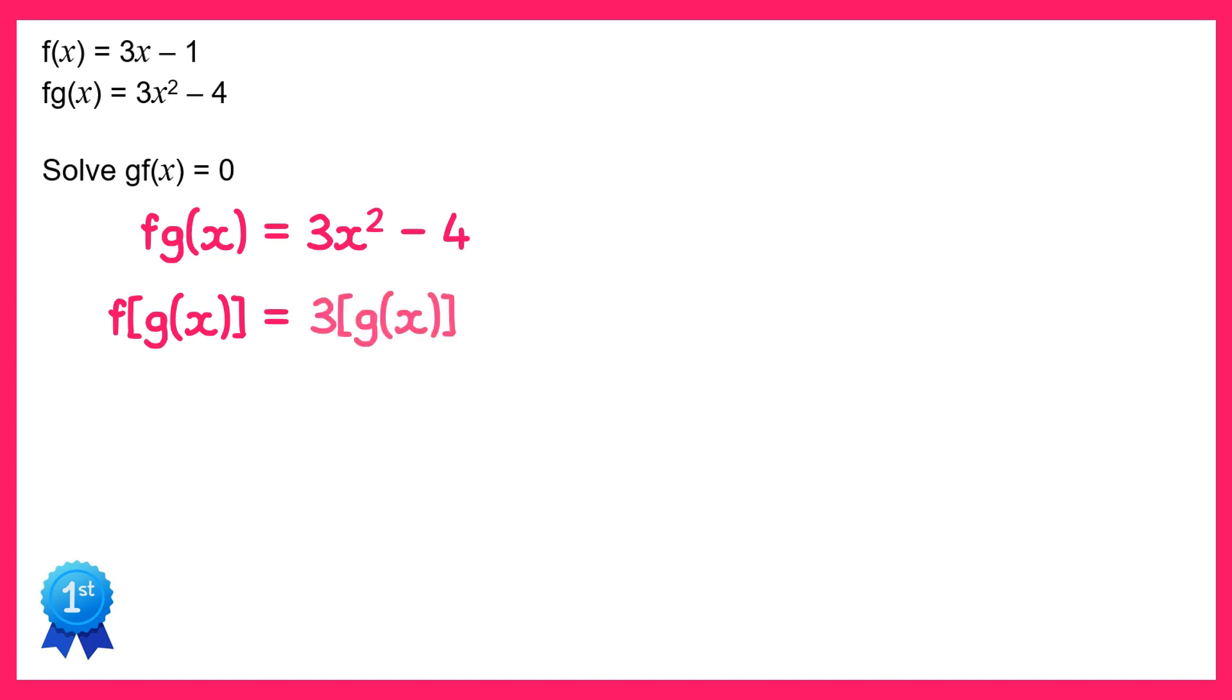That would be 3 lots of g of x take away 1. Now both of these are ways of writing fg of x, so they must be equal to each other. So we could write 3g of x take away 1 equals 3x squared minus 4.